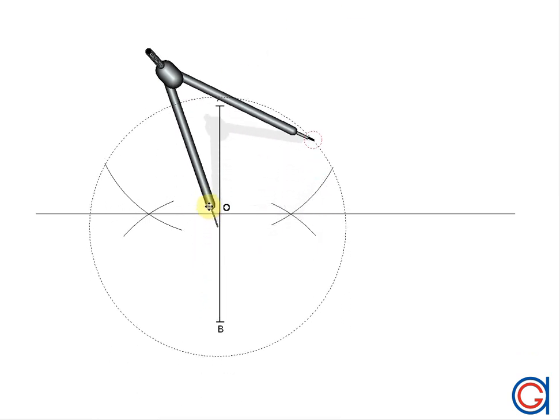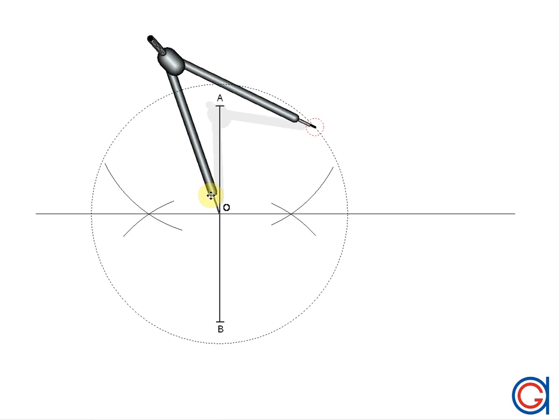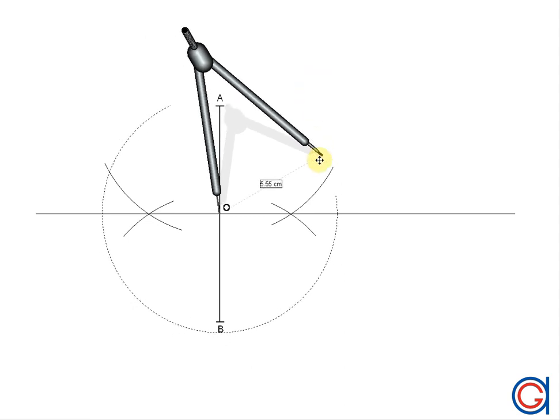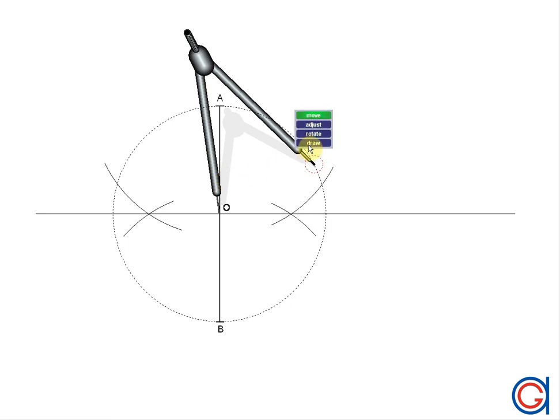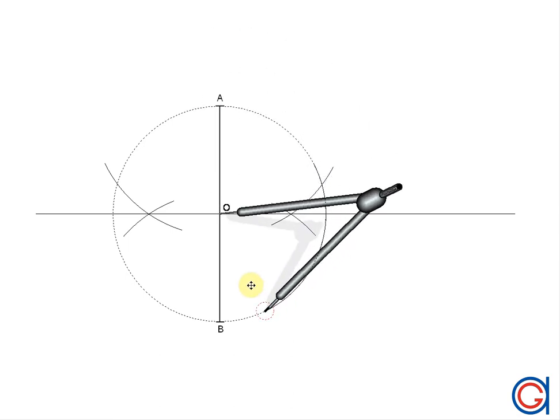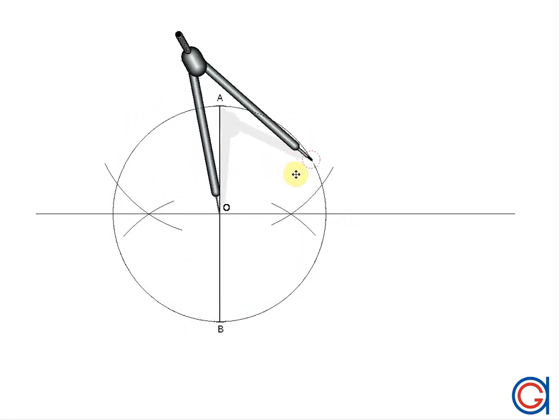The next step is to draw a circle centered on the midpoint O and with a radius OA. This circle intersects the horizontal line at two points. The point on the right side we will call X.